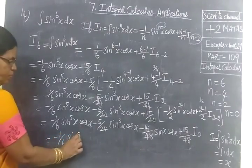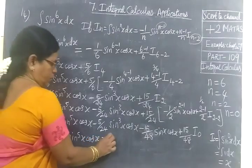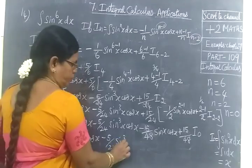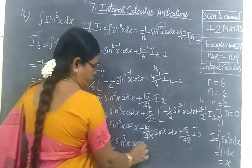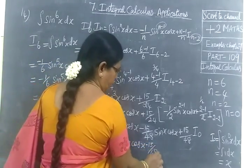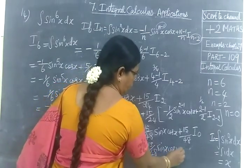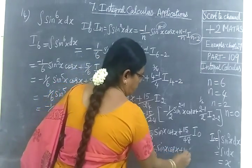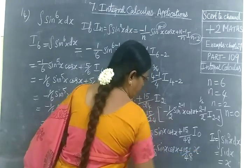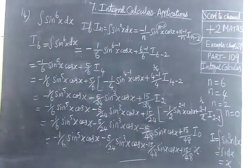So the full answer is: minus 1/6 · sin power 5x · cos x, and the next terms include 15/48 · sin x · cos x plus 15/48 · x. Now we check the answer for this.